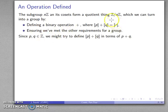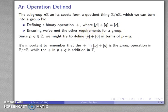Let's think about that. These cosets are represented in terms of p, q, and r. All of these things are elements of the set of integers. So I might try to define the coset addition in terms of the addition of p and q.